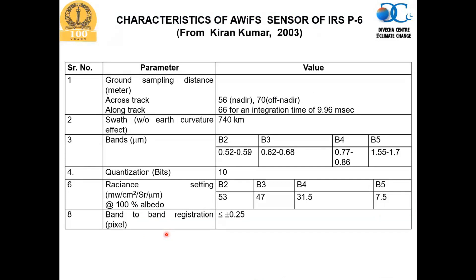Let us understand what we want to do. We look at the characteristics of the AVIP sensor on the IRS P6 satellite. We need to realize clearly that the algorithm is developed for a specific satellite sensor — not arbitrarily for any other thing. In order to do that, we need to know certain characteristics of that sensor. In this particular case, we are looking at the AVIP sensor of IRS P6.